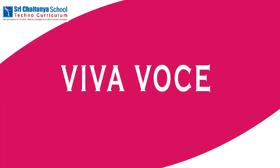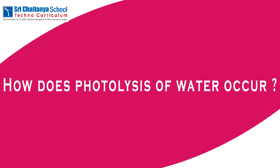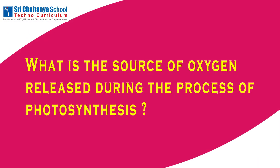Based on this experiment, I will ask a few questions. How does photolysis of water occur? Photolysis of water in the presence of sunlight is the breakdown of the water molecule into hydrogen and oxygen. Next question: what is the source of oxygen released during the process of photosynthesis?